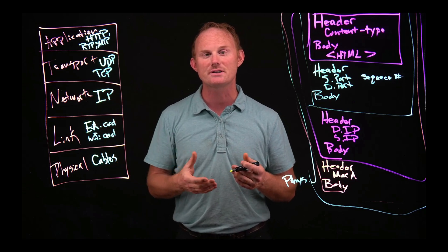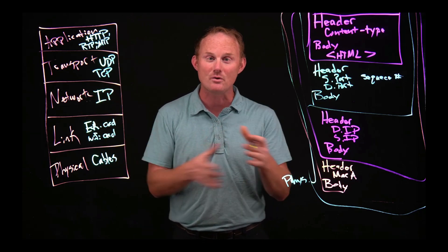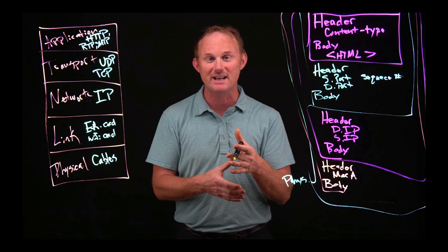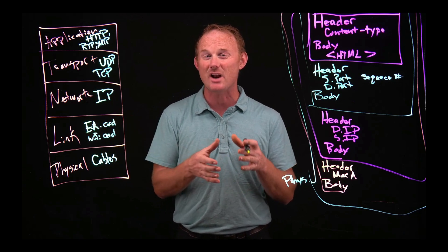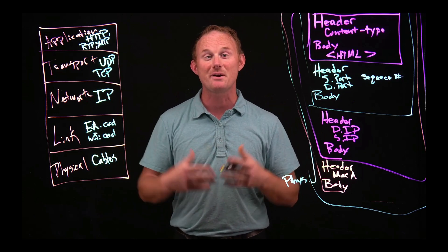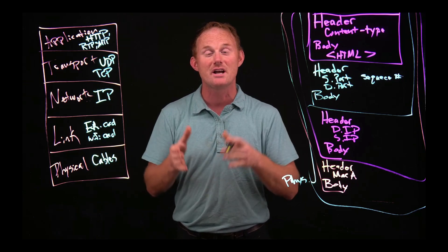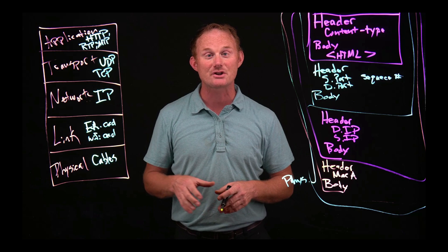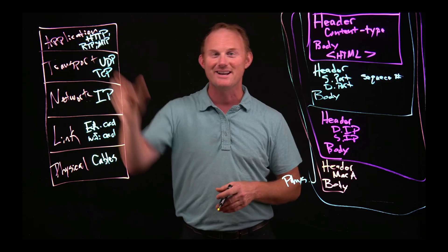The network or the IP portion is going to be the company deciding what route do we take to get to your city. The link portion will be how do we get from your city to your doorstep, and the physical portion is going to be all the humans, trucks, the airplanes that are actually used to get all of this in place.